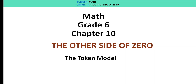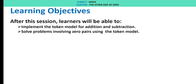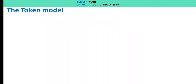Hi all, let's start Math, Grade 6, Chapter 10: The Other Side of Zero — the token model. Learning objectives: after this session, learners will be able to implement the token model for addition and subtraction and solve problems involving zero pairs using the token model.